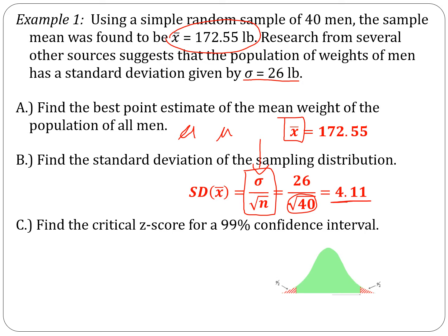This is the same equation we used when taking a sample and finding a Z-score for the average weight of 40 men, for example. Critical Z-score for a 99% confidence interval — this is the same thing we did in the last section. 99% cut out of the middle leaves 1% for the two red tails, split evenly. We look up 0.995 in our Z-table — everything to the left of that line — and we get 2.575.